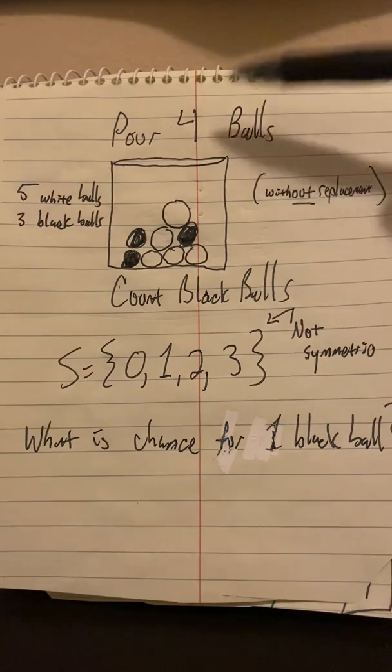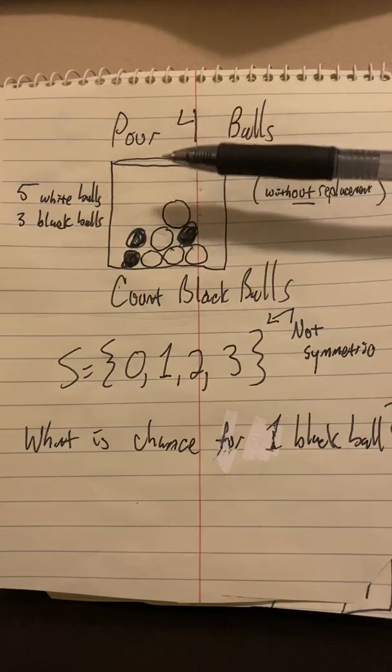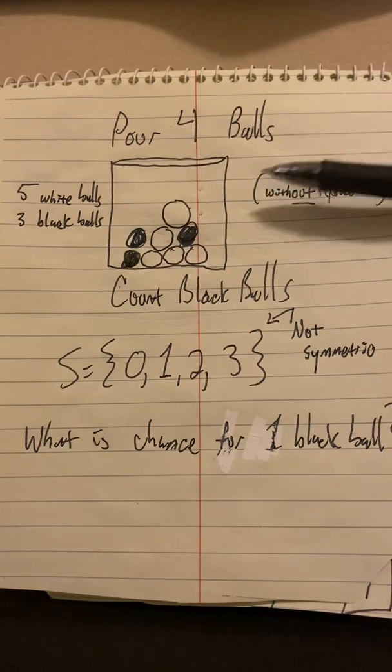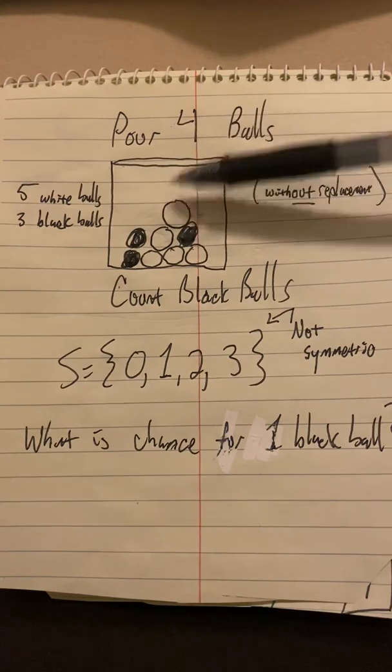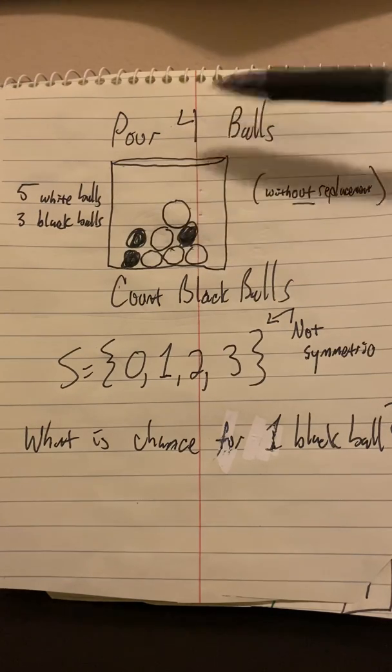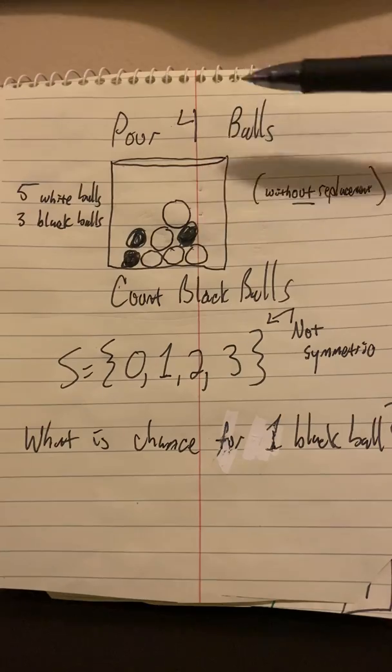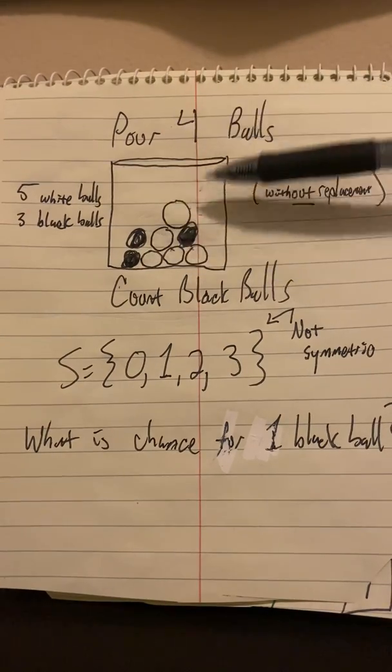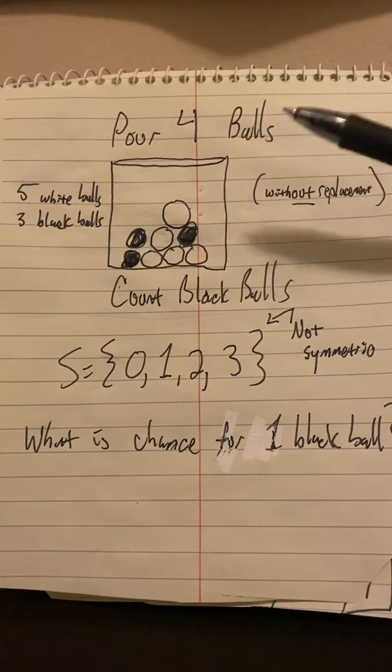And we're going to pour out four of these balls without replacement. That means we're pouring them all out at once. Four are going to drop out randomly. Or you can think of it as we're going to pull one out, look at it, set it down, and then pull a second one out, look at it, set it down. And we're not putting them back in as we pull them out. So the size of the population keeps going down as we pull.